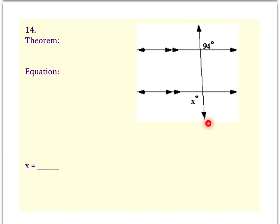Before we pick out our theorem and write our equation, let's think about this. My x looks like it's on the left side of the transversal, outside of my parallel line. The 94 is on the right side, and it is also on the exterior. What relationship are they when they are on alternate sides of the transversal and outside of the parallel lines? Alternate exterior.